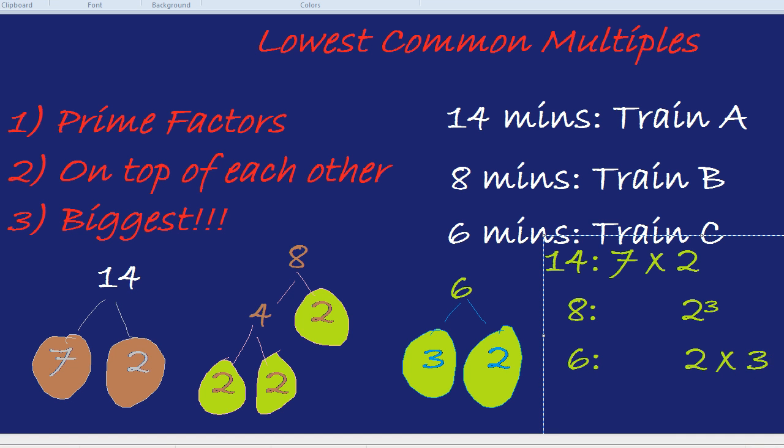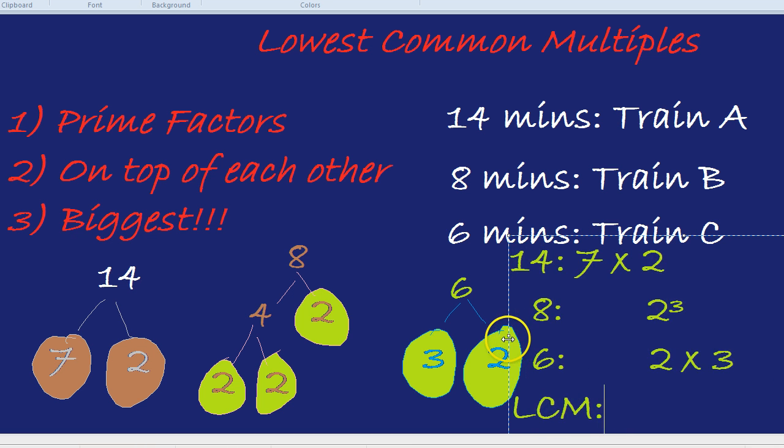Therefore, for our final row, we have our LCM, our lowest common multiple. What's bigger, 0, 0, or 7? It's 7. 2, 2, or 2 cubed? It's 2 cubed. And 3 or nothing or nothing? It's 3. It's the same trick we did with 2 numbers, works with 3.